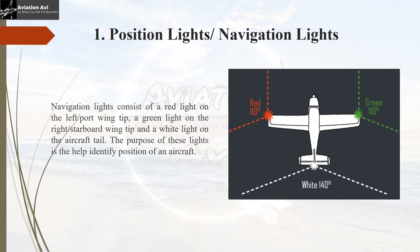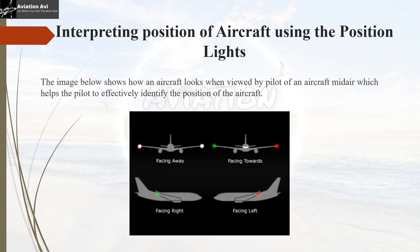These lights help in identifying the position of the aircraft. If the pilot sees two white lights on the wing tips, the aircraft is moving away. If the pilot sees a green light on the left wing tip and a red light on the right wing tip, the aircraft is coming towards the pilot. If only a green light is visible, the aircraft is moving to the right; if only a red light is visible, it is moving to the left.